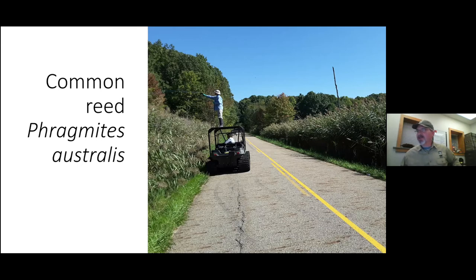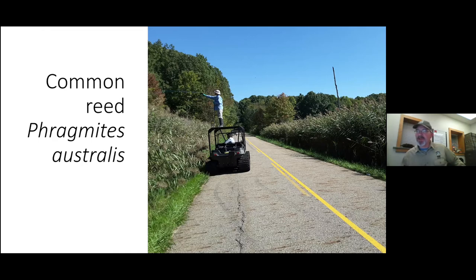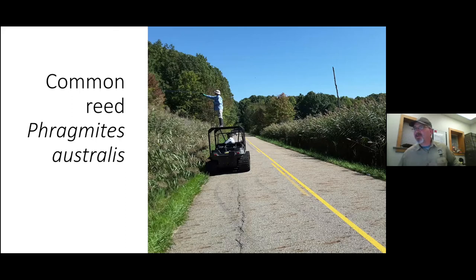In our wetlands it just overtakes and crowds everything out. It takes up a lot of water and nutrients, affects the hydrology and function of our wetlands, grows very dense, and restricts so much light from getting to the soil that other plants don't have a chance. Being such a tall plant that senesces in the fall, it can really increase the potential for fire — the great fires that occurred in Mentor Marsh in Lake County were all Phragmites burning in winter, just a lot of fuel.